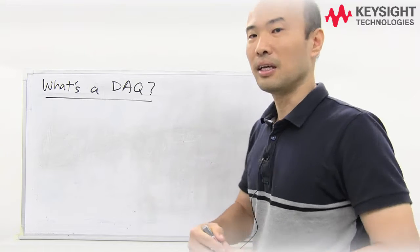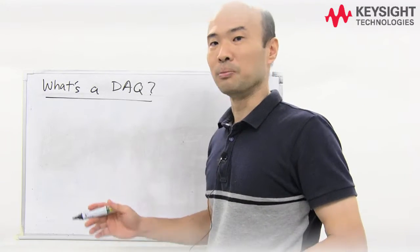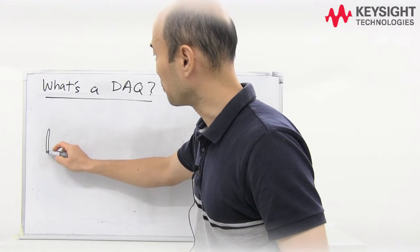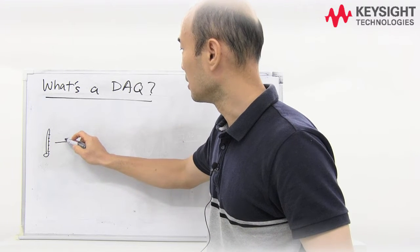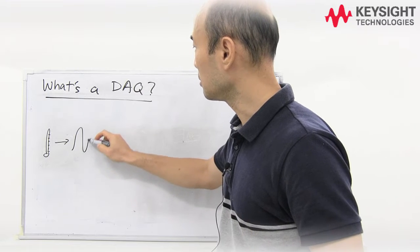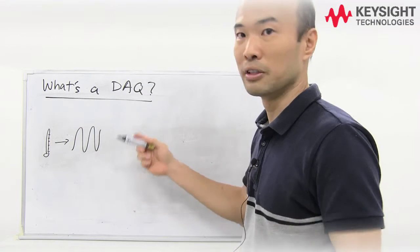So what's a DAQ? Let's say if you have a physical property you like to measure, in this case we are using temperature. A transducer from the DAQ will transform this into an electrical signal, it can be voltage or current or even resistance.